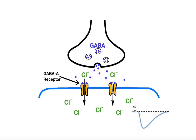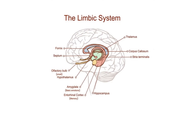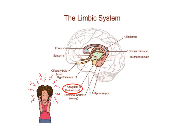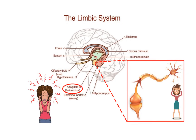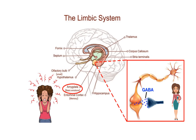GABA receptors are present in high concentration in the limbic system. One part of the limbic system is the amygdala, which contains many neurons that use the neurotransmitter GABA to control feelings of fear and anxiety. In times of stress, excitatory neurons in the amygdala fire rapidly, sending excitatory signals to other areas of the brain — this type of firing leads to feelings of panic or fear. The inhibitory interneurons in the amygdala regulate these emotions by releasing GABA. The binding of GABA to post-synaptic receptors such as GABA-A inhibits the excitatory signals, producing a calming, tranquilizing effect that prevents us from becoming overwhelmed in stressful situations.